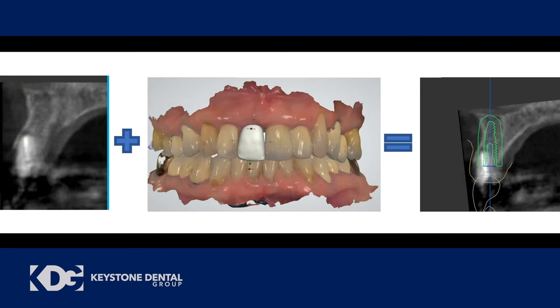Let's go quickly through the treatment process. We take a cone beam CT, as we do with all our cases. We take an intraoral surface scan. We have a virtual wax-up done — basically creating a mirror image of the adjacent tooth — and then it's all put together. We're seeing the cross-section of the cone beam CT and the soft tissue profile as it exists in the patient right now.